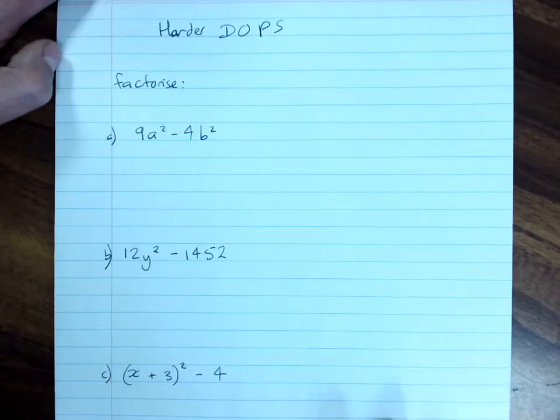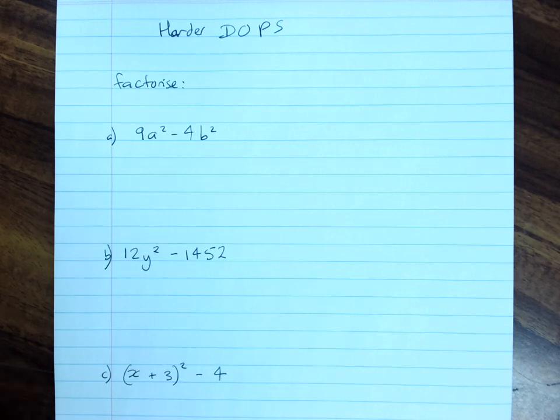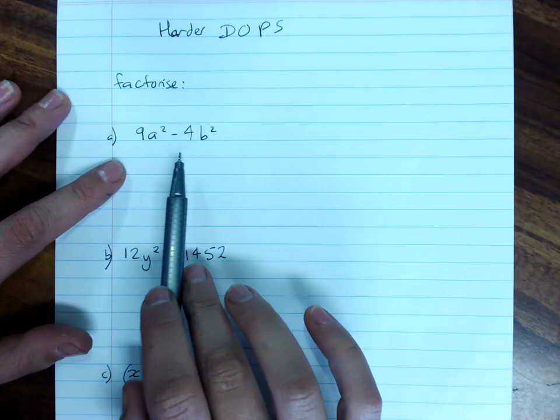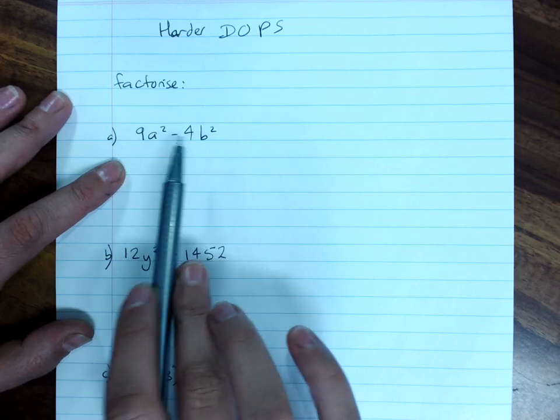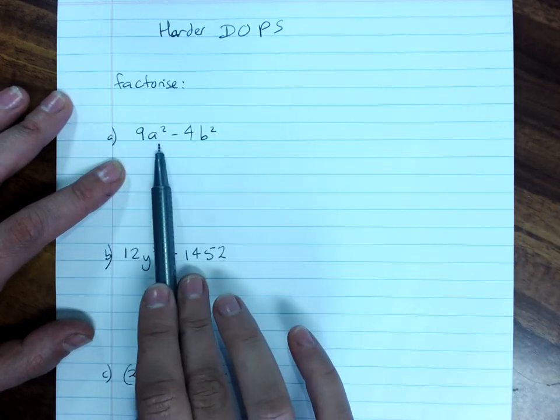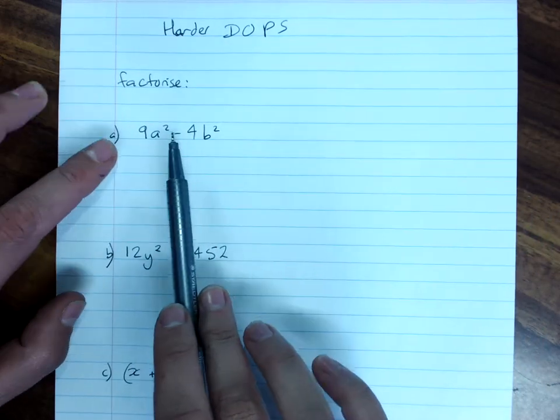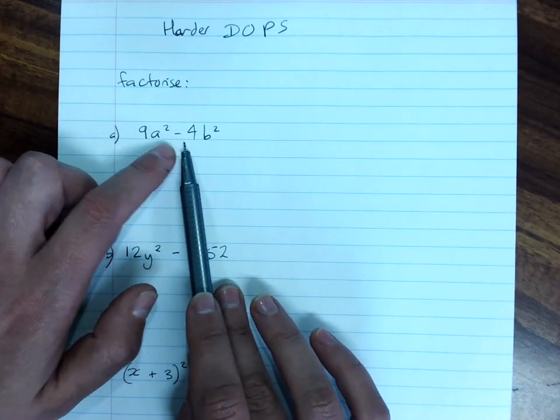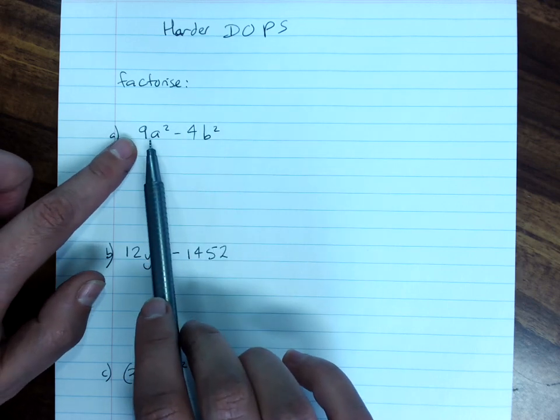There's some harder difference of perfect squares questions you might have to tackle. So, we always check for a common factor first, before you do anything else. No common factor? Okay. There's two terms and a minus. I have to think difference of perfect squares.